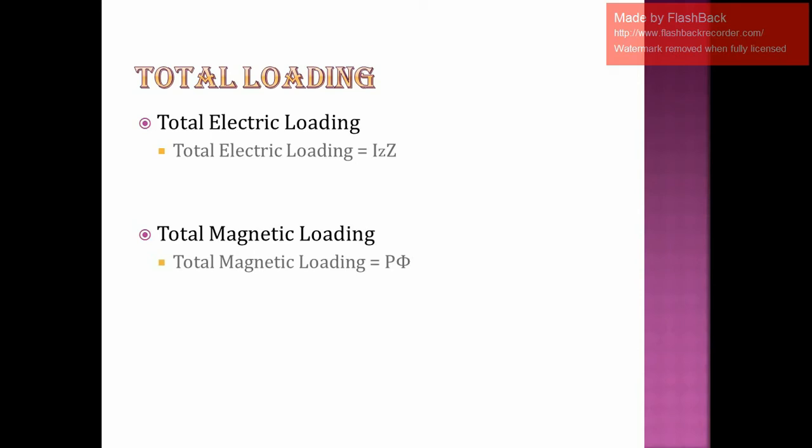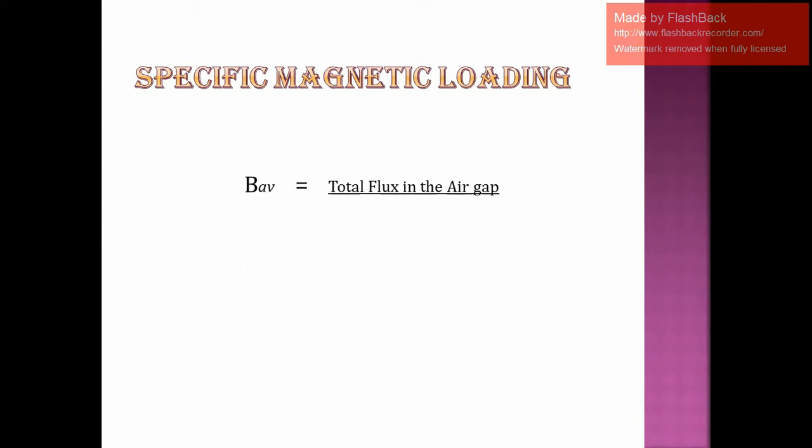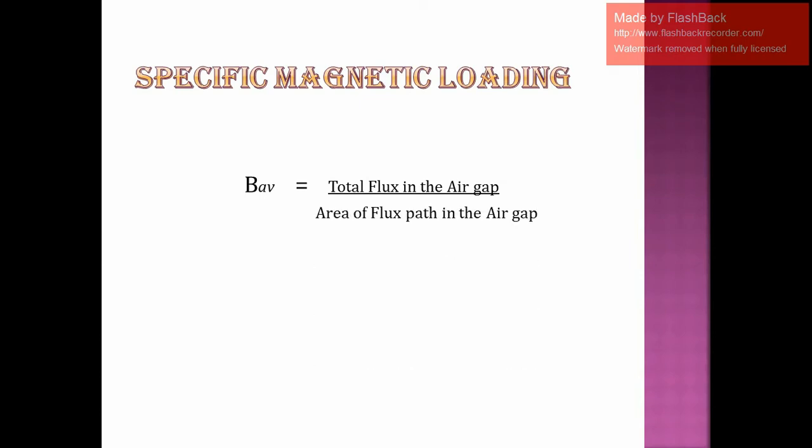In the design of each electrical machine, the starting point is always to choose both the specific loadings. Let us first consider specific magnetic loading. Specific magnetic loading can be defined as the average flux density over the air gap of the machine.